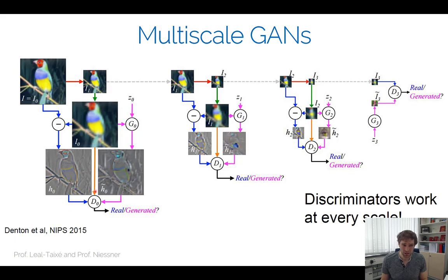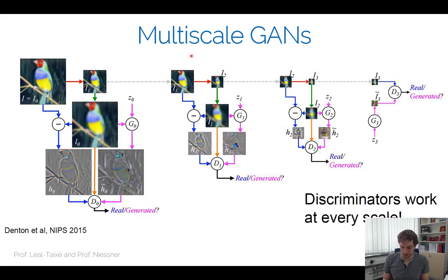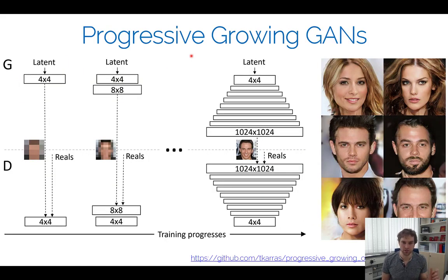The key advantage of this multi-scale design is that you can force the network to focus on global structure at coarser levels and on fine-scale detail at finer levels. Building on this idea, NVIDIA's progressive growing GANs, published in 2017, uses a very similar concept but produces dramatically higher-quality results — it was one of the papers that convinced the community that GANs could genuinely work at high resolutions.